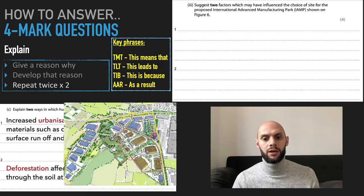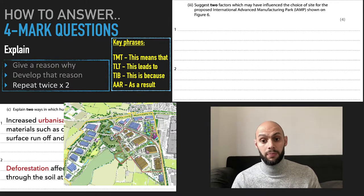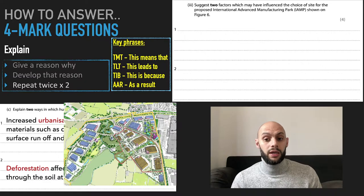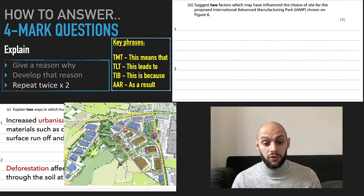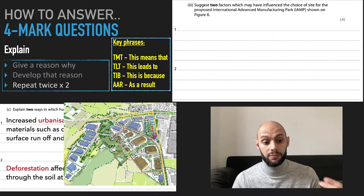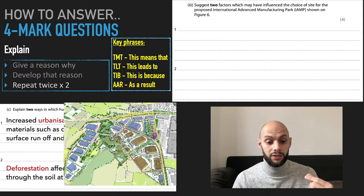So essentially what they're asking is why has this company or international advanced manufacturing park, why have they proposed to choose these sites in particular for their manufacturing park? It's worth four marks but you've got to give two factors. So you make your point and then you explain it, develop it, and you make another point and you develop it.